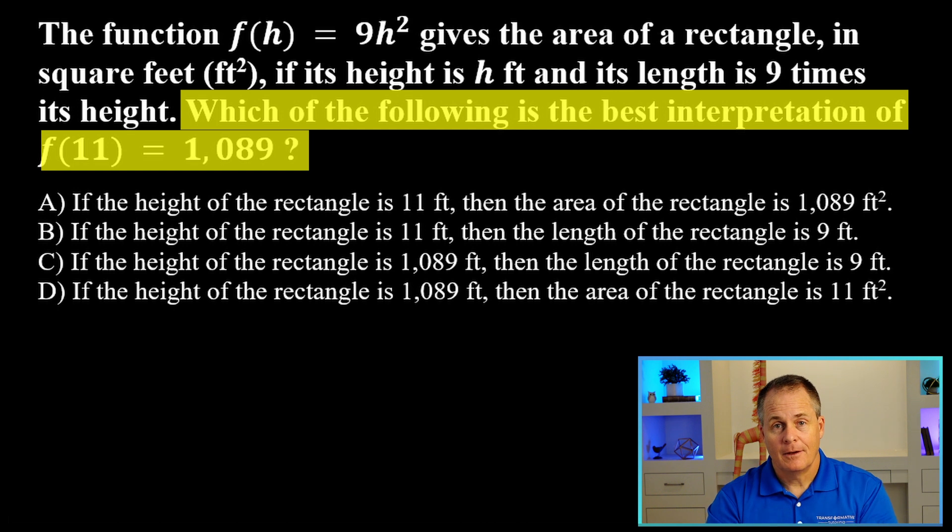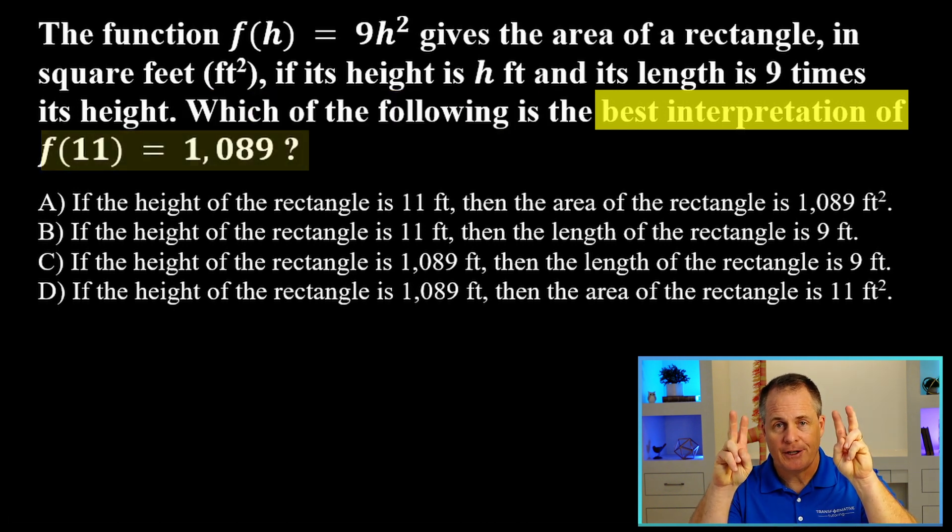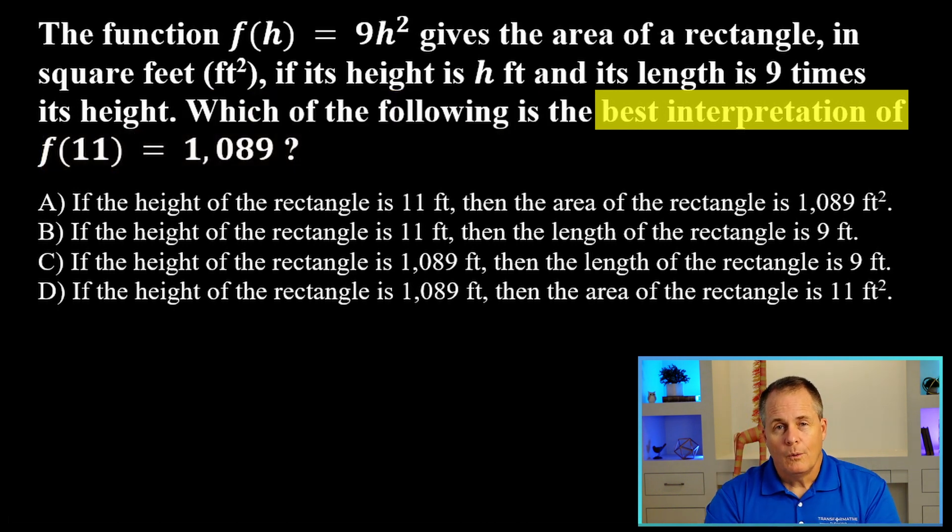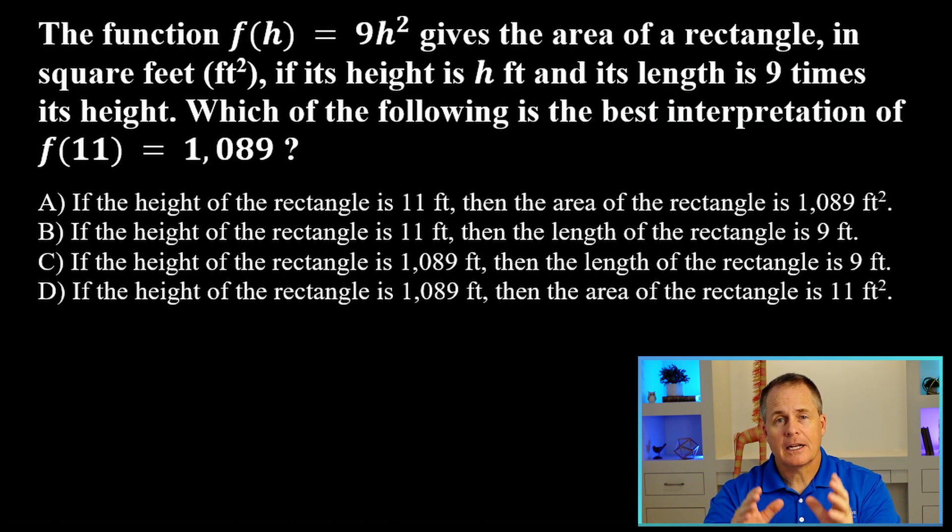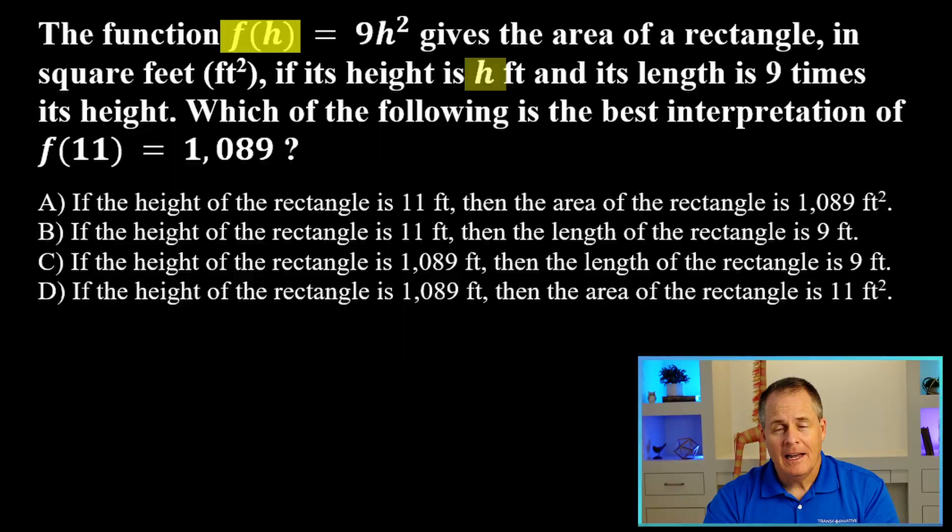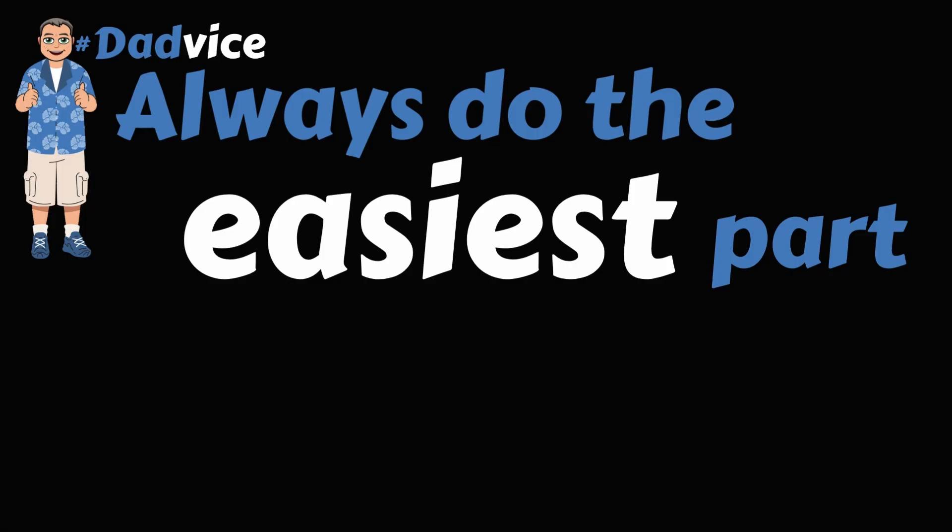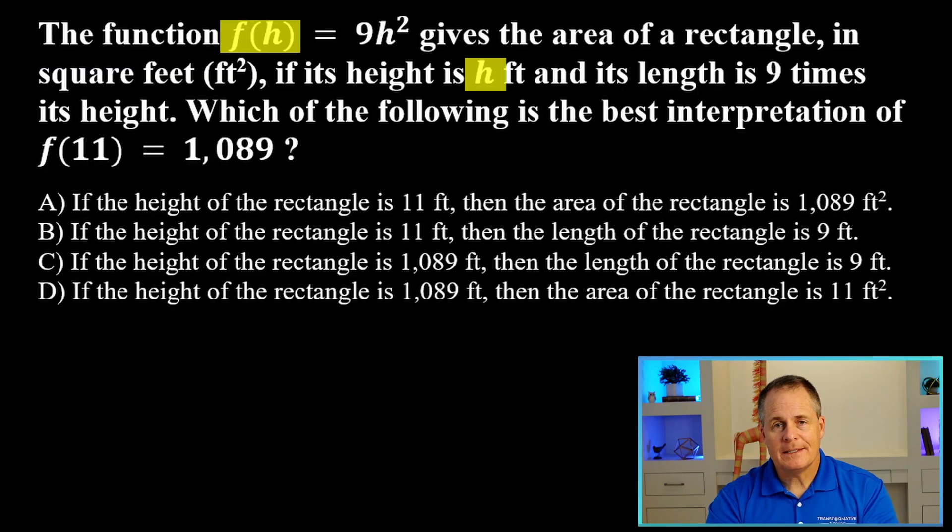So in this problem, I feel like it's the best interpretation of, which is a very common question on the SAT. What I like to do is just condense the problem down into defining the variables. And in this problem, there's two different variables. There's f(h) and then there's h. And I always believe in doing the easiest part of a problem first. So what's easier? Understanding what f(h) means or what h means?